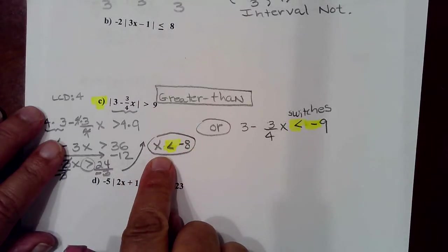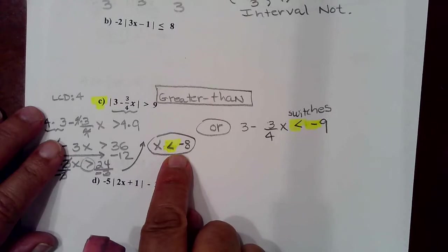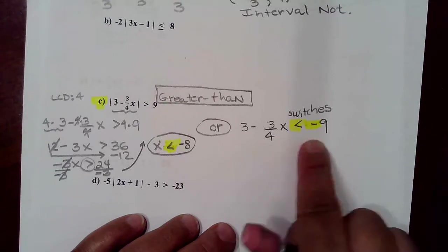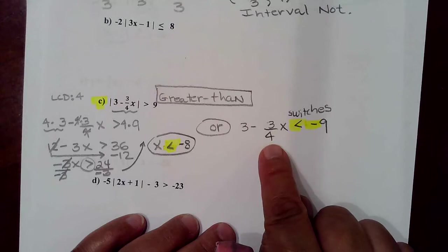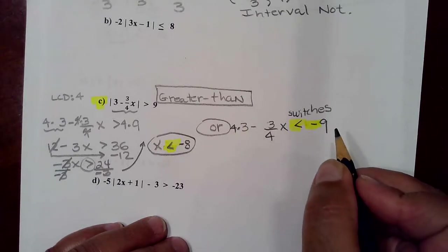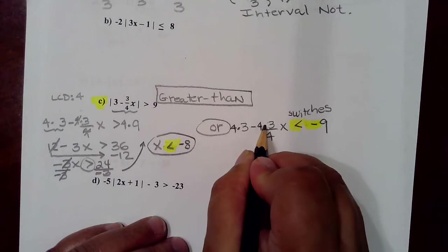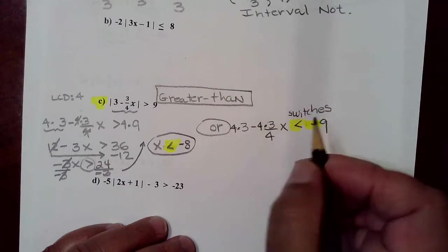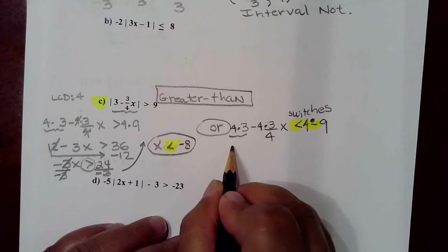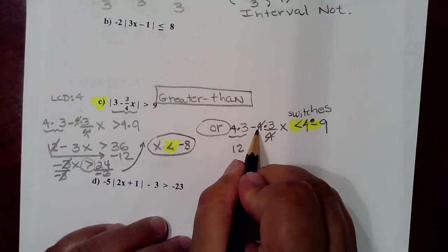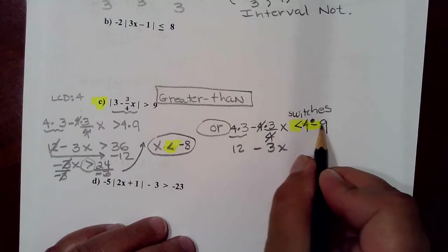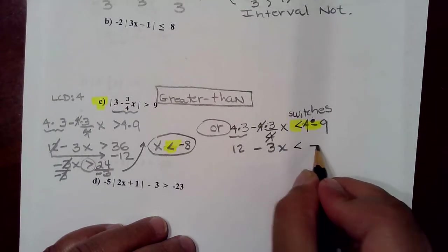There are infinite solutions in this area — all numbers less than negative 8 are solutions. You can also find infinite solutions by solving the second inequality. To get rid of the one fraction, multiply by 4 on all terms so that we still have the same balanced equation. So 4 times 3 is 12, the 4 cancels leaving negative 3x, and 4 times negative 9 is negative 36.